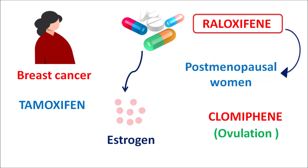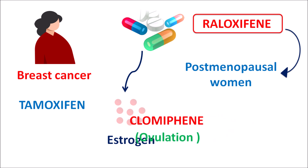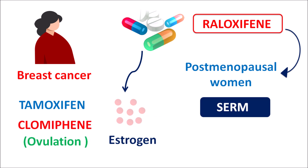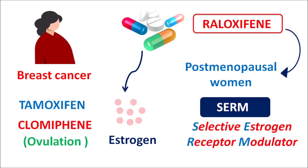Even though these drugs belong to the same category, they have different clinical indications. Tamoxifen can be used in the treatment of breast cancer in both pre-menopausal as well as post-menopausal women, whereas Raloxifene is only useful in post-menopausal women, and Clomiphene is completely different — it can be used to induce ovulation in anovulatory women. All three drugs belong to the same category: SERM, Selective Estrogen Receptor Modulators.